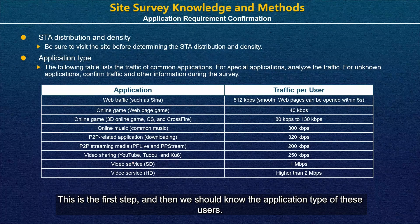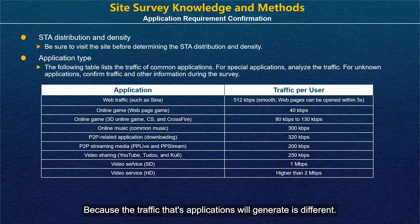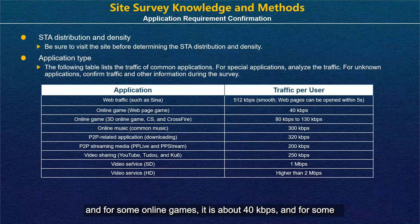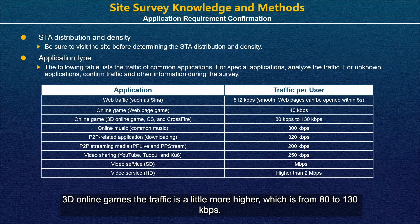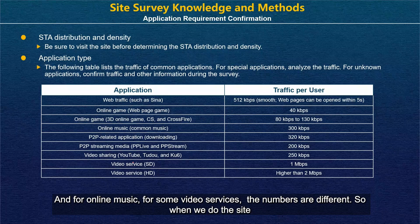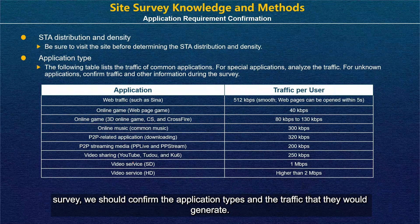We should know the application type of these users, because the traffic that applications generate is different. For example, for some web applications the traffic per user is around 512 kbps. For some online games it's about 40 kbps, and for some 3D online games the traffic is a little higher, from 80 to 130 kbps. For online music and video services the numbers are different. So when we do the site survey, we should confirm the application types and the traffic they would generate.